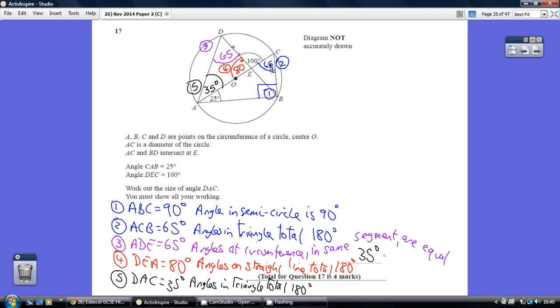Now another one of our circle theory rules tells us that if we've got a couple of points, that the angles at the circumference in the same sector are the same. So if this angle is 65, this angle is also 65.